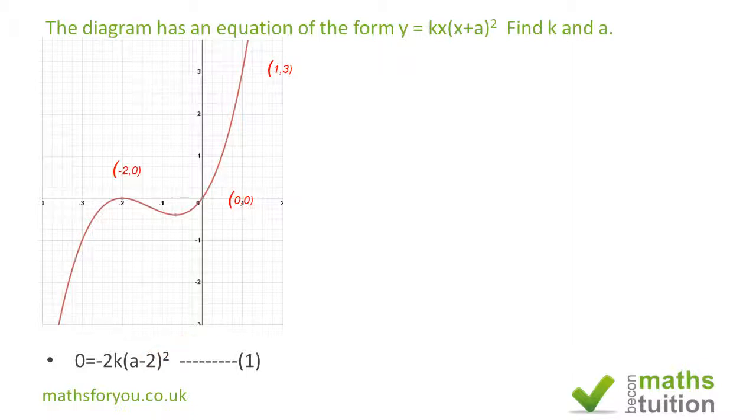I've not used the zero zero coordinate because that would mean everything is zero. If x is zero and y is zero, we end up with k equals zero and a equals zero, and that won't make any sense. So instead I've used the third coordinate where y is three and x is one. We now have two equations.